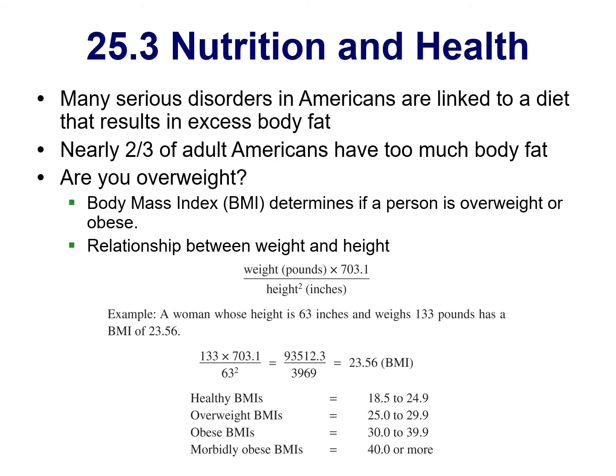One thing we can do with nutrition and health is calculate how much we are overweight using BMI — body mass index. You take your weight in pounds times a coefficient number and divide by your height in inches to calculate your BMI. Right now, many Americans are either overweight to morbidly obese, which is a serious problem.